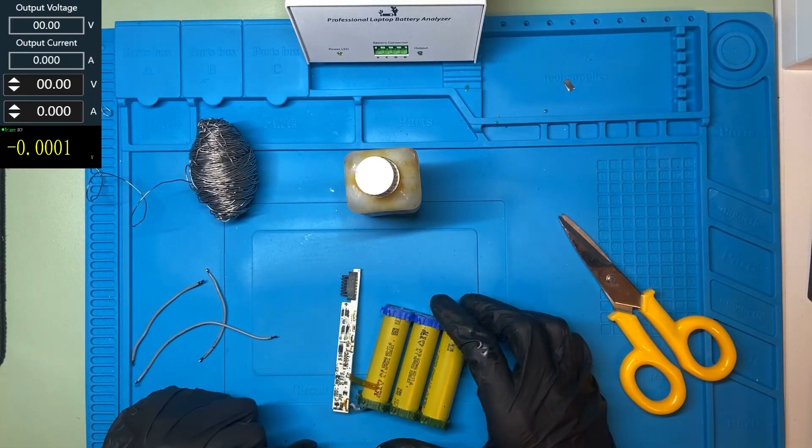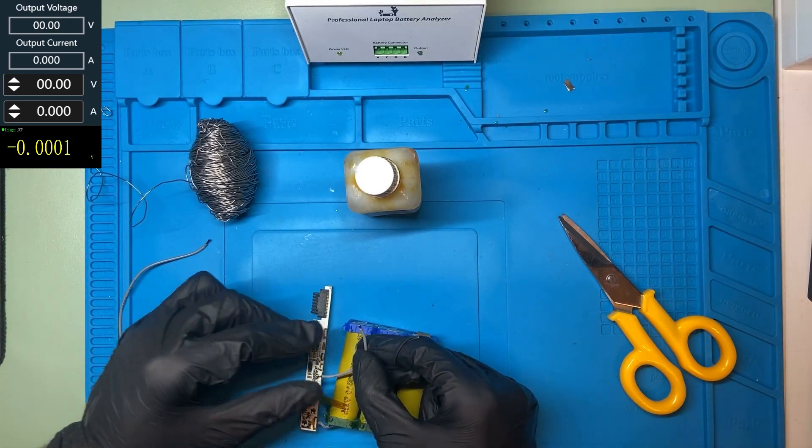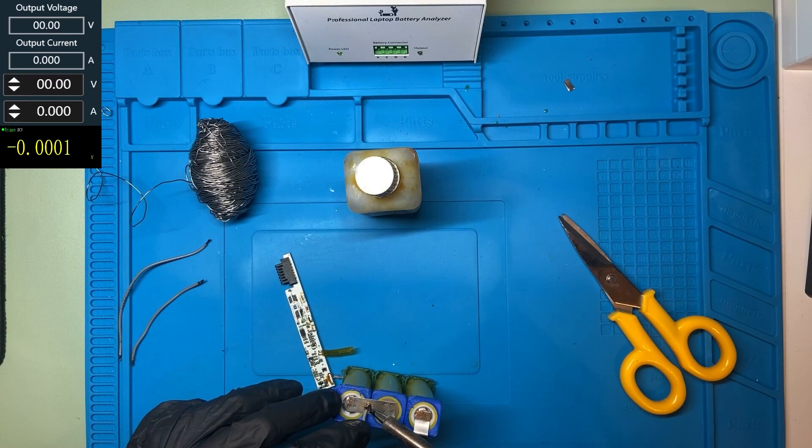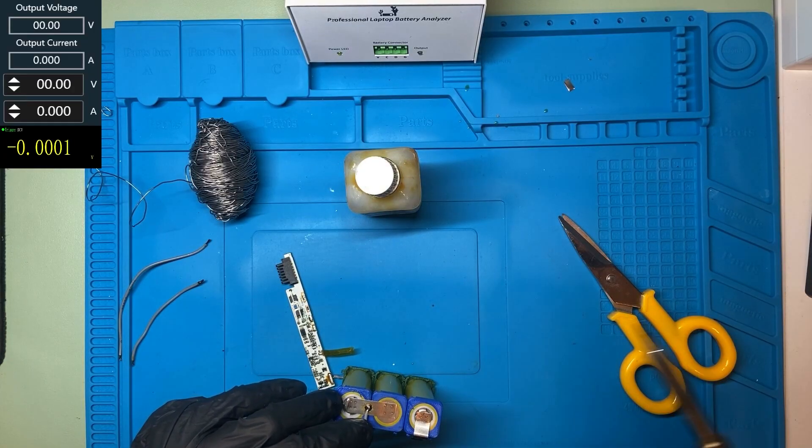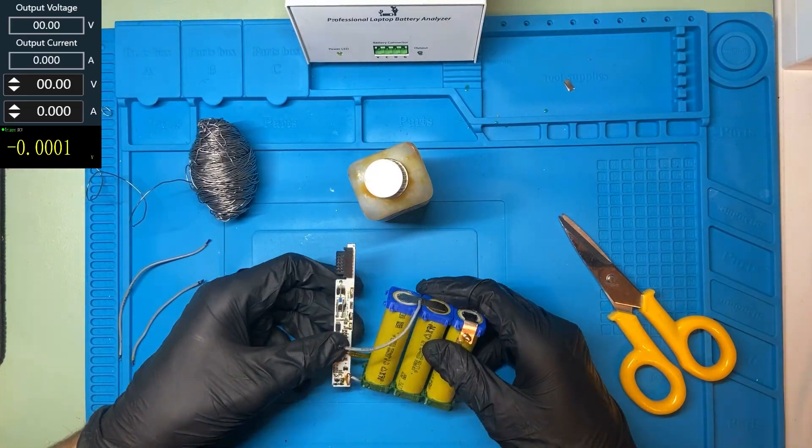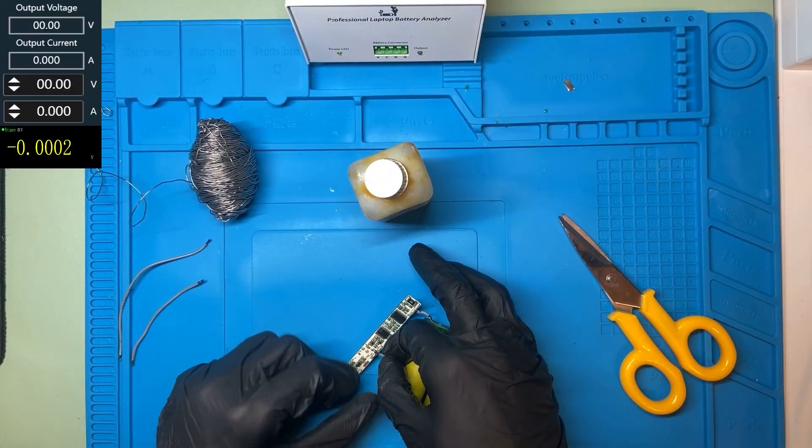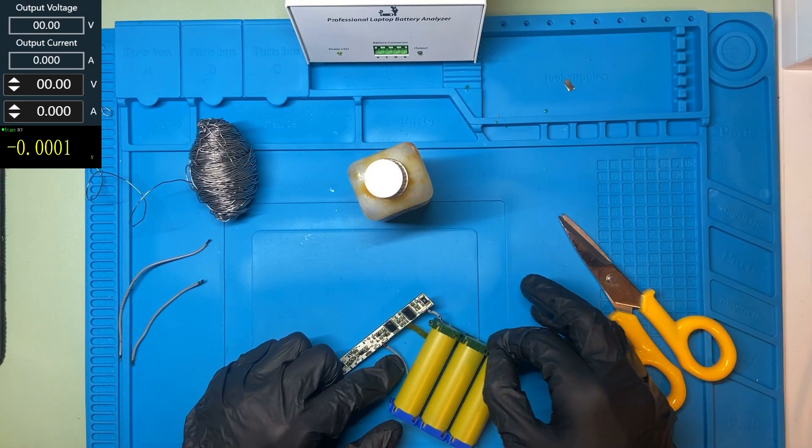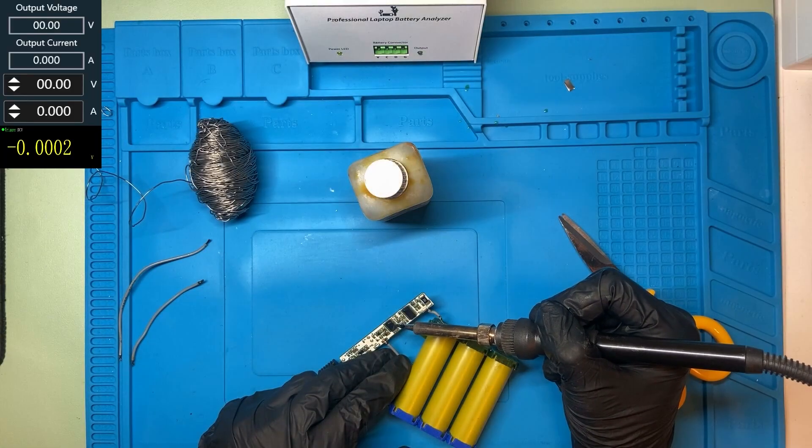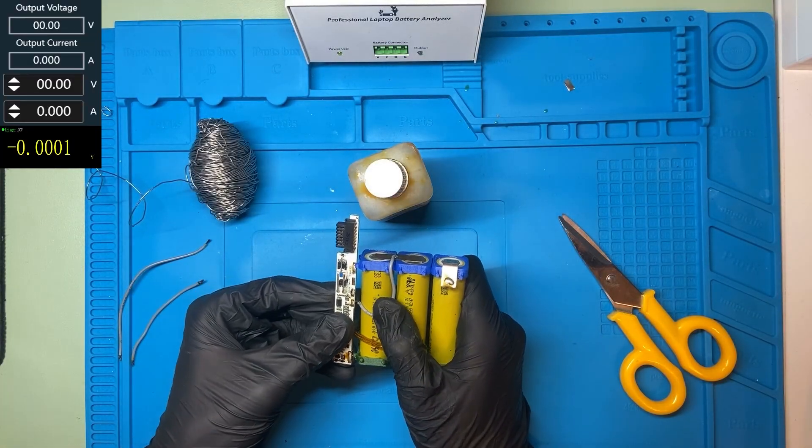This is the first cell. This is the second one. Be very careful to not touch these contacts. Very very carefully. This wire will come like this and I'm gonna solder it right on this pin. The second one. Very good.